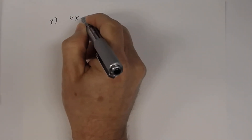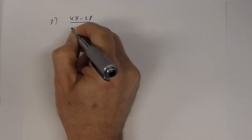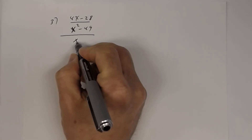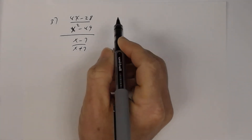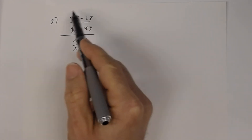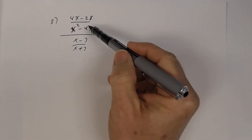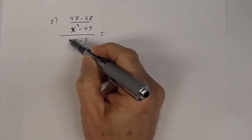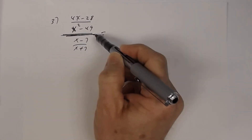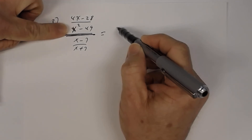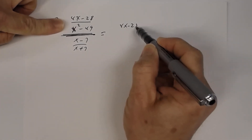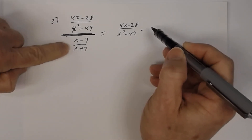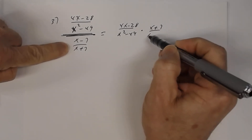Number three: we have four x minus twenty-eight divided by x squared minus forty-nine, and that is being divided by x minus seven divided by x plus seven. Notice the complex fraction is already in the form of one rational expression divided by one rational expression, so you can go directly to multiplication. Take four x minus twenty-eight over x squared minus forty-nine times the reciprocal x plus seven over x minus seven.